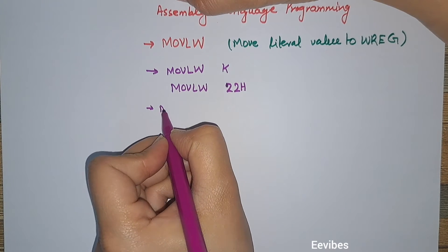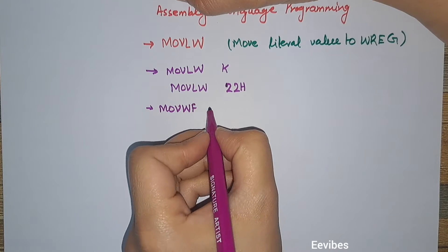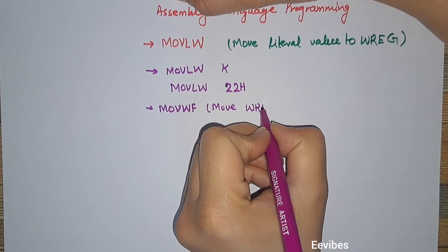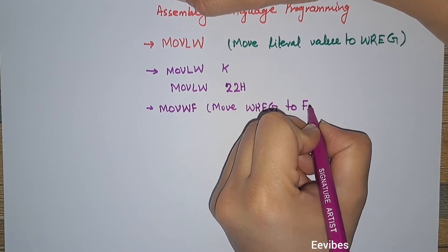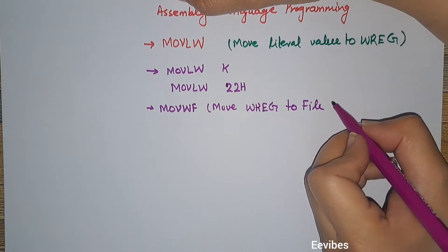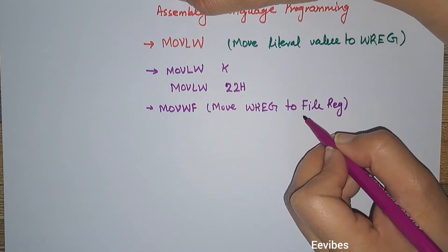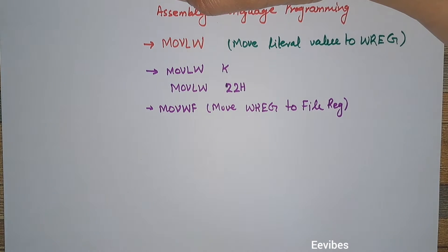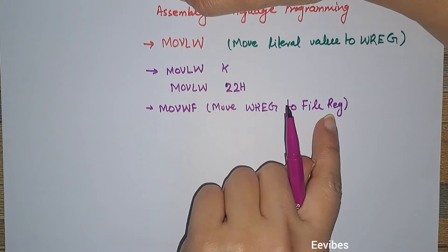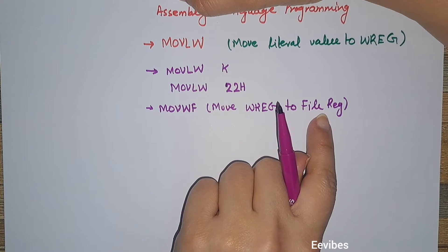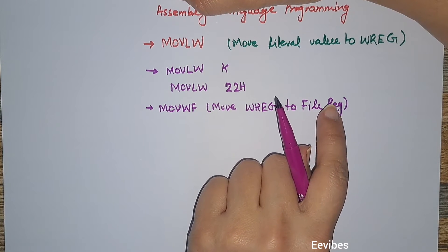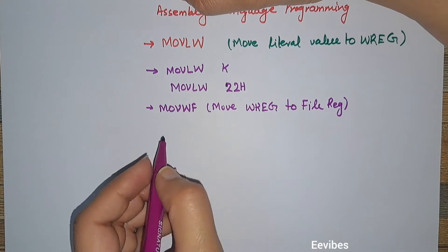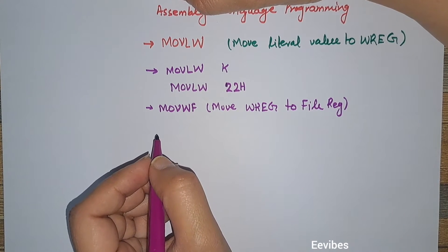The next instruction is Move W to File Register. File registers are the RAM locations used for data storage, scratch pads, and other purposes. We can address file registers directly using their addresses, or we can assign them names using equate directives, which we will cover in coming lectures.